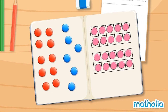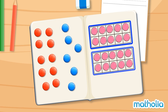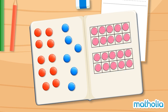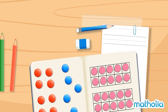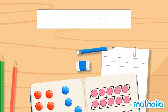How many circles are there? There are ten circles in the ten square here, and another ten circles in the ten square here. Ten and ten make twenty. There are twenty circles. We can write twenty as a number like this. We can write twenty as a word like this.